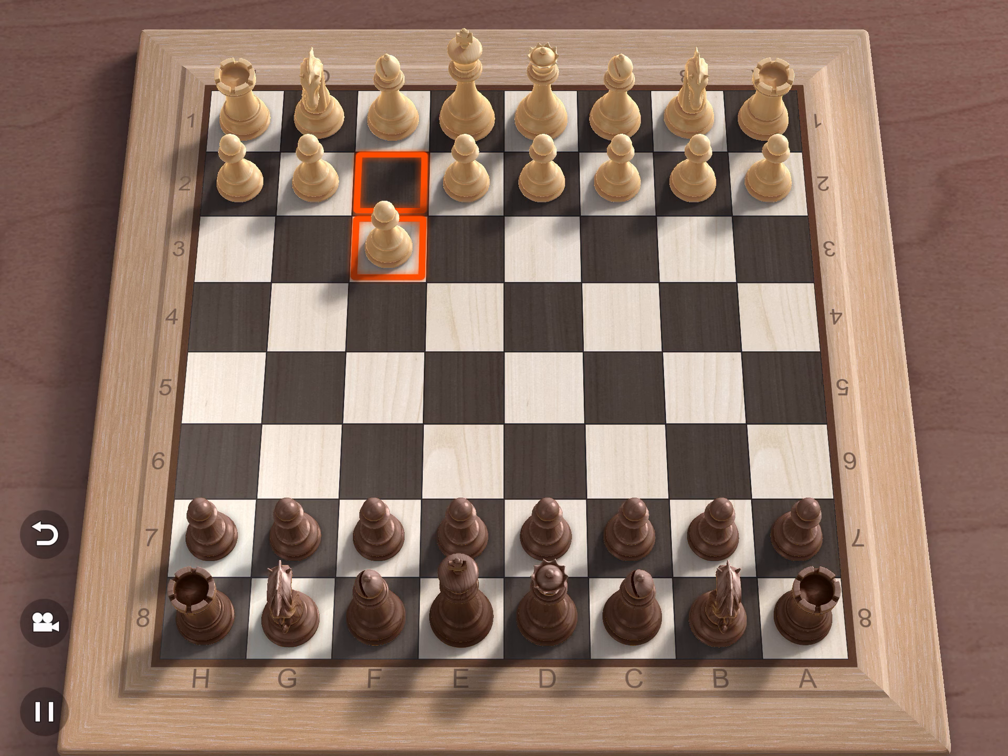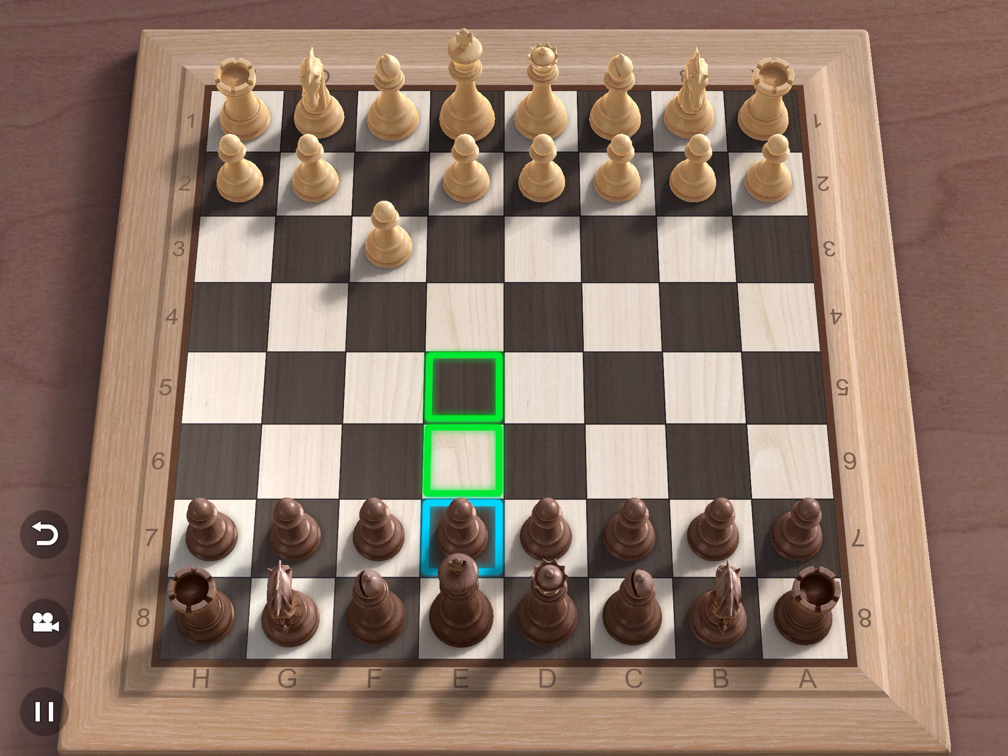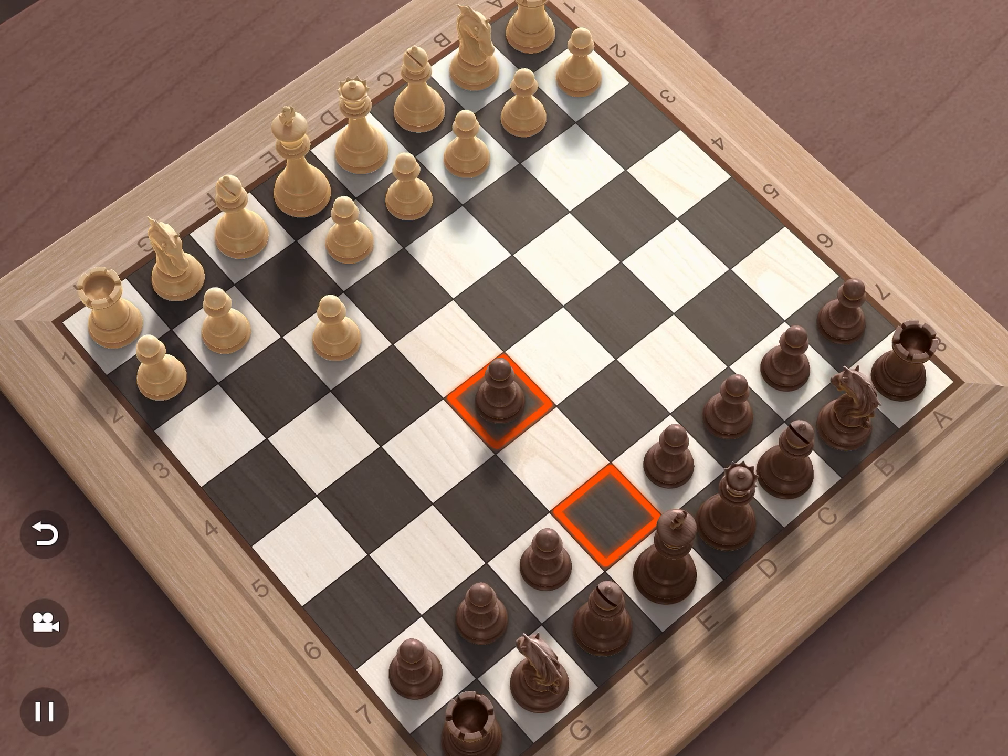And now black will move its pawn either once or twice. Anything is good. A common move is E5 for black.